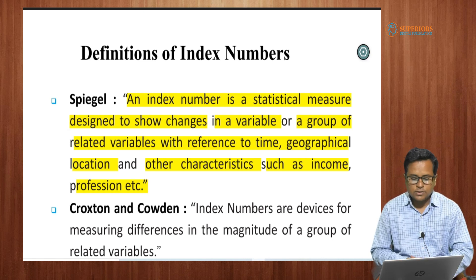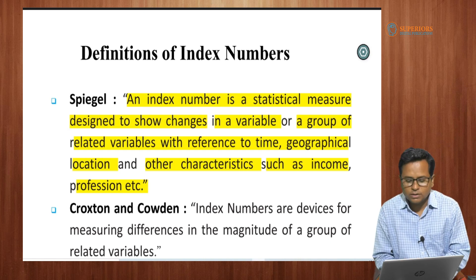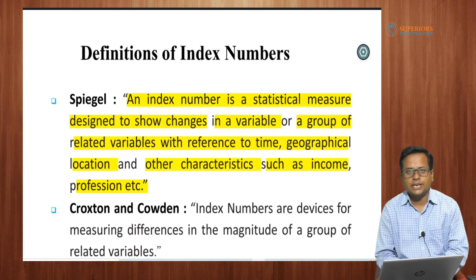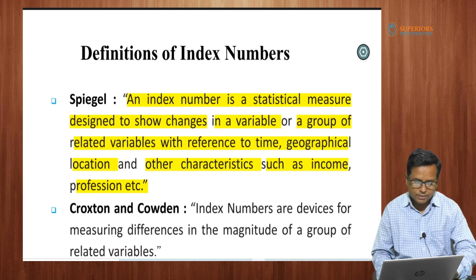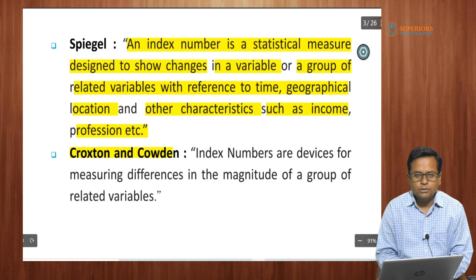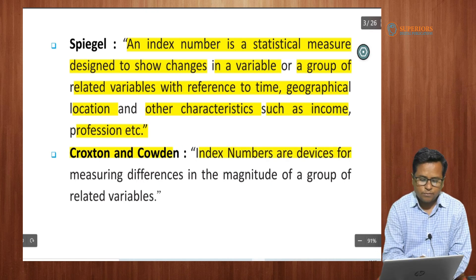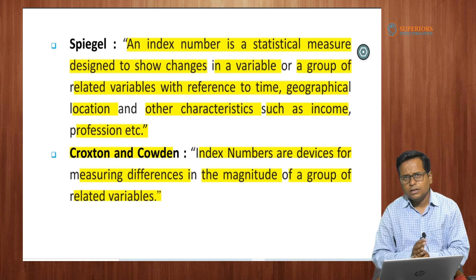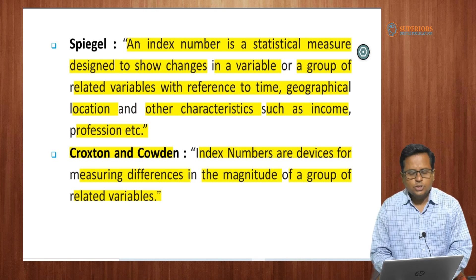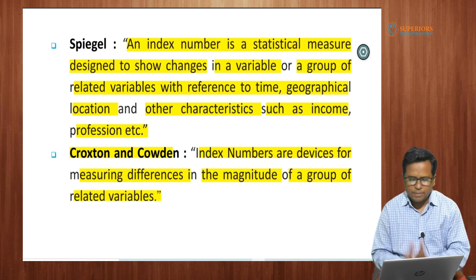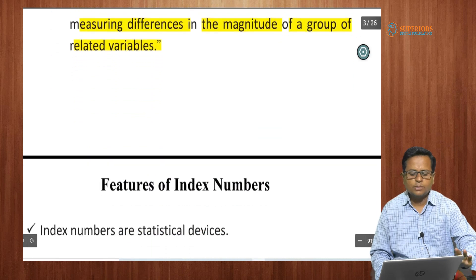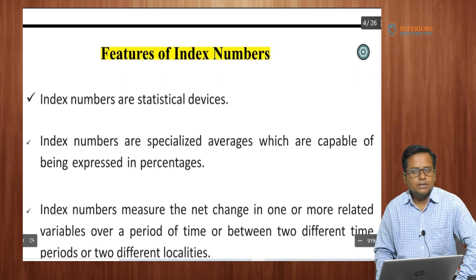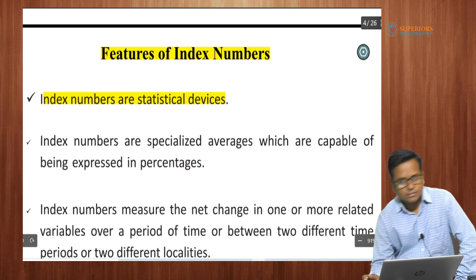The price index numbers are a statistical tool that shows us the changes taking place in economic variables. According to Proxton and Cowden, index numbers are devices for measuring differences in the magnitude of a group of related variables.